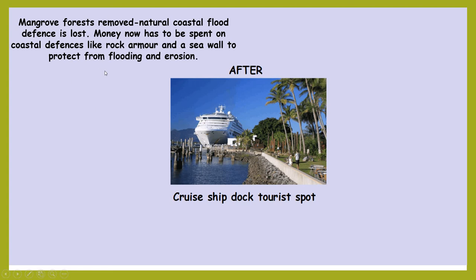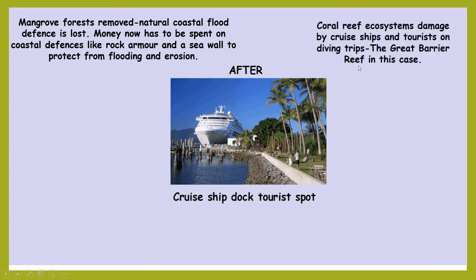Our human actions quite often are backfiring on ourselves in the long run — we just don't realise it in the short run because it's all about making a profit. The mangrove forest has been removed, so that natural coastal flood defence is lost, and you're now going to have to spend more money defending the coastline from erosion. That area of Australia is really low-lying, not very high above sea level, so you've got to defend yourself at cost using man-made materials. The ecosystem of the coral reef is also going to get really damaged, because you've got cruise ships coming in and out over the top of it.